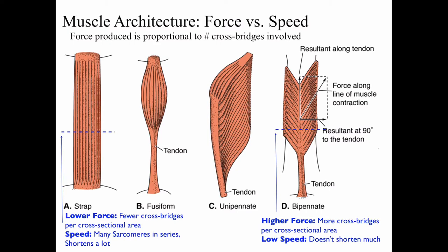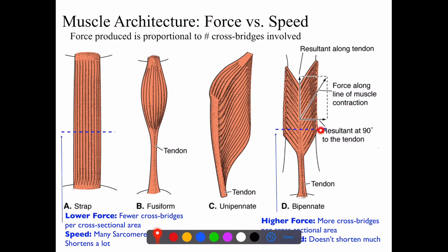In contrast, the bipennate has very short muscle fibers, so this muscle is not going to contract by a lot, but it can generate high force because there are more cross bridges per cross-sectional area of the muscle. So it's low speed, but high force.